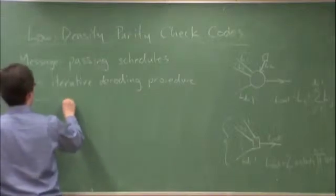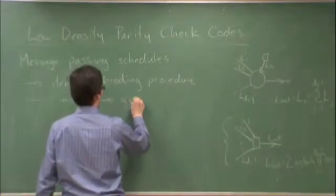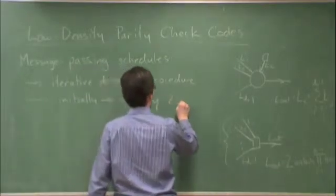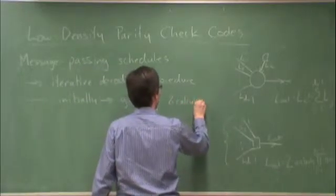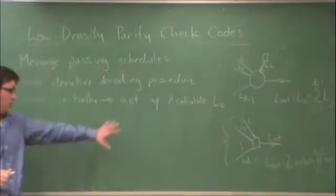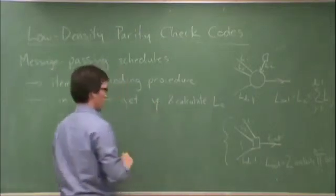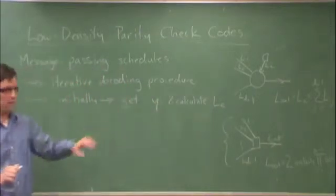Initially, what we do is we get the channel observation Y and calculate LC for all the channel observations. In other words, we get all the YIs and calculate all the LCs.